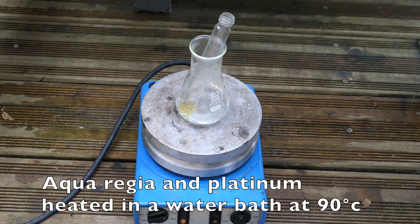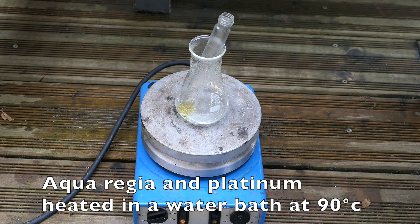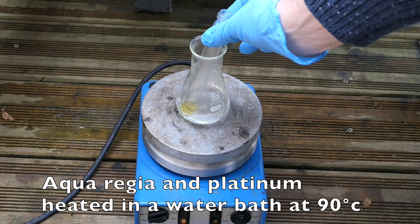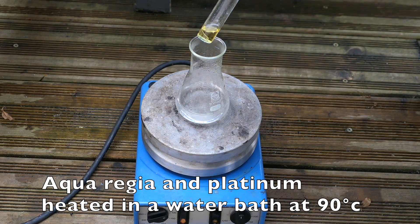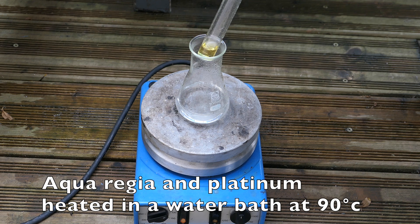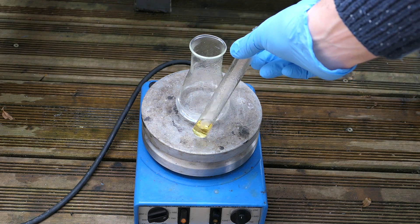Normally to make hexachloroplatinic acid we would use aqua regia, which is a mixture of hydrochloric acid and nitric acid heated to high temperatures. This process is quite dangerous due to the toxic fumes it produces, and it also requires nitric acid which I prefer to avoid due to its hazardous nature.